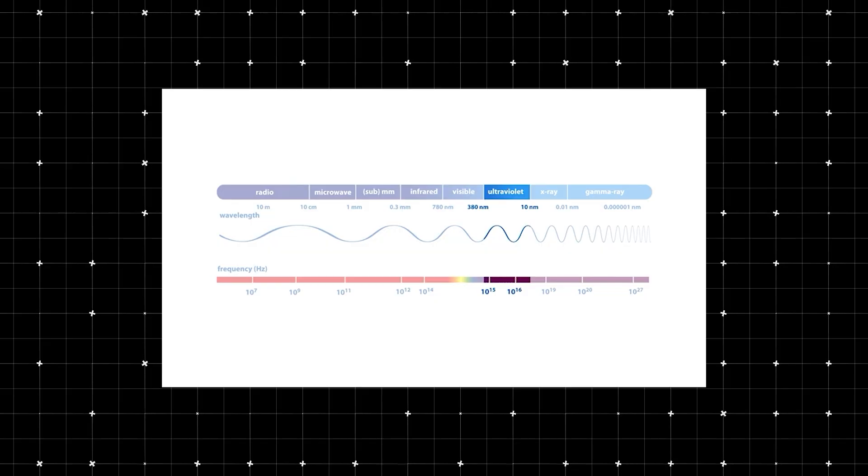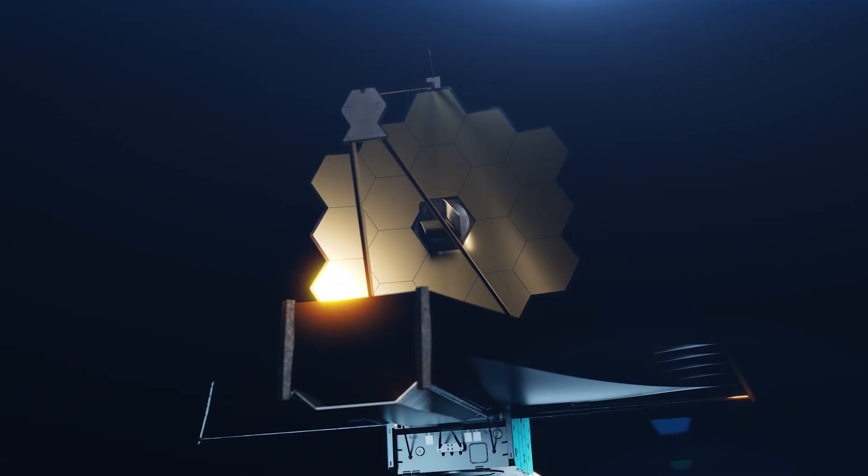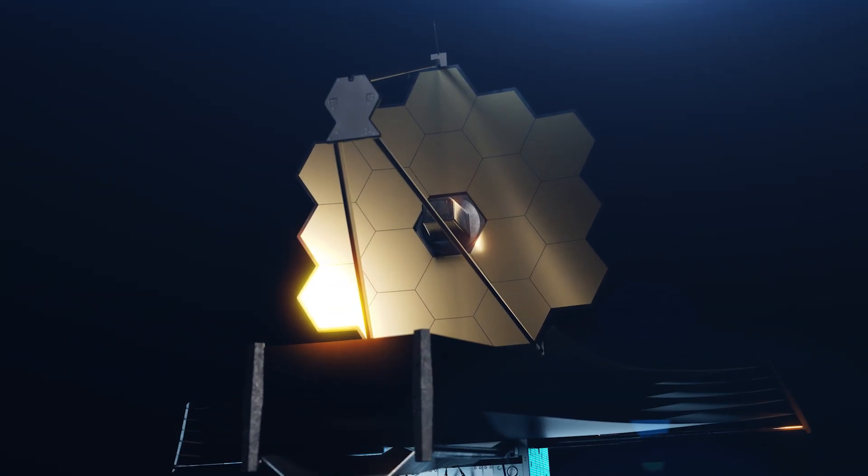Initially, this light might have been in the ultraviolet or visible spectrum, highly energetic but not quite at the X-ray or gamma-ray level.